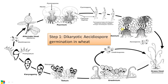The structure on which aeciospores are formed is called the aecium. These spores contain two nuclei without fusion — that condition is called dikaryotic. Aeciospores cannot infect barberry, so they travel by wind toward a wheat field. Once they reach the wheat field, they infect a leaf and form extensive dikaryotic hyphae.